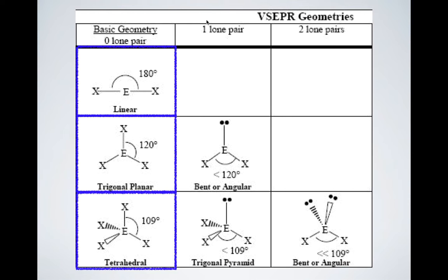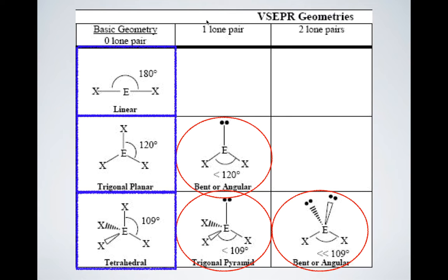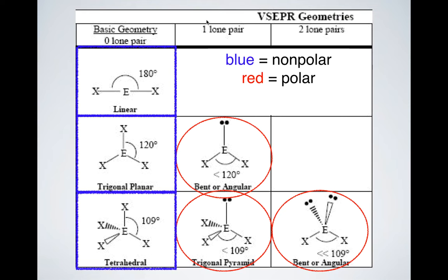If you look at those three geometries, they all have something in common: they have an equal pull on the electrons. The others have angles less than the standard values, which means there's going to be an uneven pulling of electrons. Label the blue ones as non-polar and the red ones as polar. Geometries in blue are normally non-polar, and the red ones will always be polar. Notice the ones that have lone pairs of electrons on their central atom are polar, and the ones that just have atoms surrounding them pulling equally are non-polar.